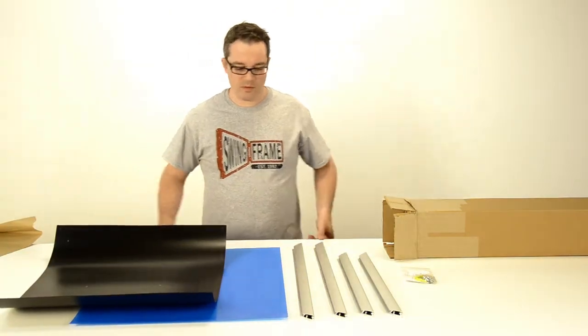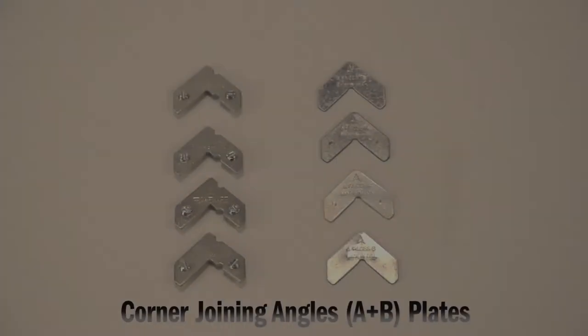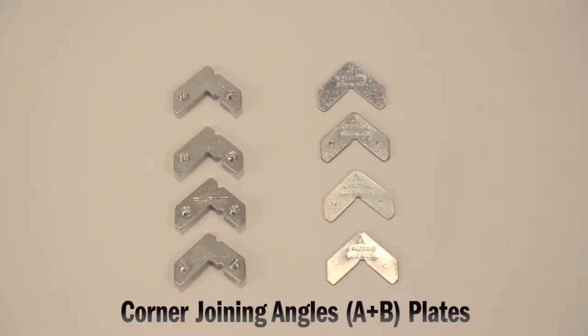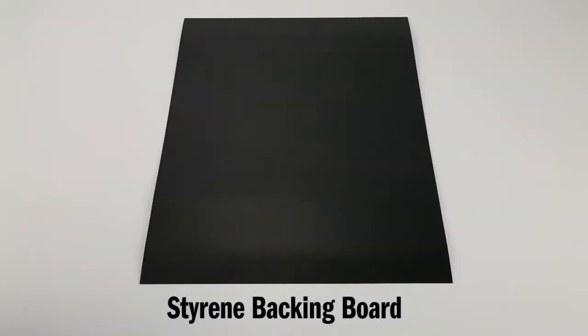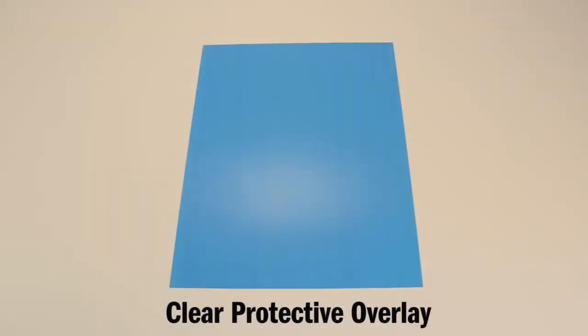But don't worry, assembly is easy. Here's how you do it. First, lay out all the materials from the snap frame shipping box. There should be four rails, four corner joining angles consisting of eight pieces, a backing board, and a clear plastic overlay.